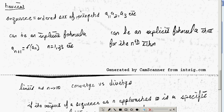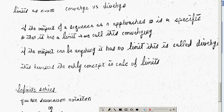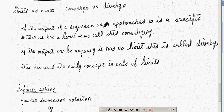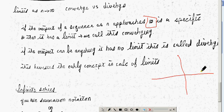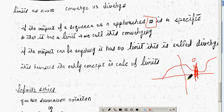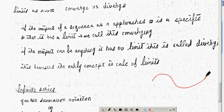To review: a sequence is an ordered set of numbers, and it can be defined with an implicit formula or an explicit formula. Now, convergence versus divergence: if the output of a sequence as n approaches infinity is a specific number, then it has a limit and we call this converging. If it goes on forever without settling on a value, it diverges, meaning it doesn't have an actual limit.